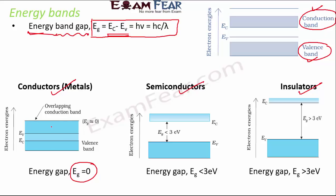In semiconductors, there is a band gap but it is less than 3 electron volts. The gap is not very large, so if we provide some external energy it is possible for electrons to move from the valence band to the conduction band. Once there are electrons in the conduction band, it can conduct current — though not as freely as conductors.